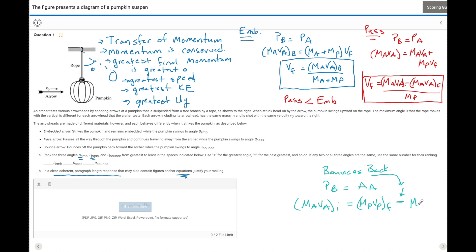So we have the M of the arrow, V of the arrow, final. So now we see that the final velocity of the pumpkin is equal to M_A V_A initial plus M_A V_A final divided by M of the pumpkin. And we see that with this sum, this is going to be the greatest.